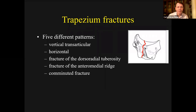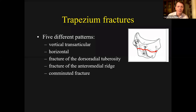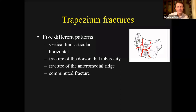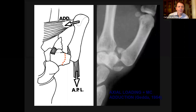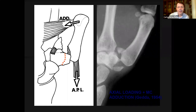Then you can have horizontal fractures, which are quite rare, fractures of the dorsal radial tuberosity, the anterior middle ridge, or occasionally very comminuted fractures. The usual mechanism is axial loading — the thumb is pushed proximally, with a force going down, often associated with a Bennett-type fracture at the base of the metacarpal and a vertical fracture of the trapezoid.